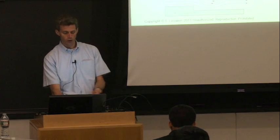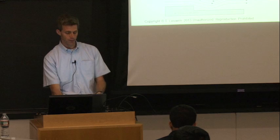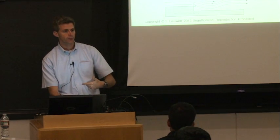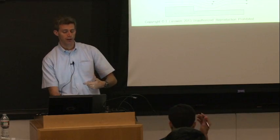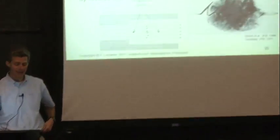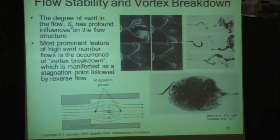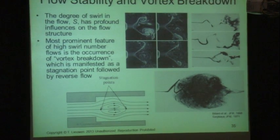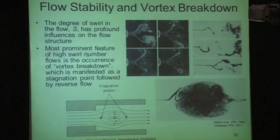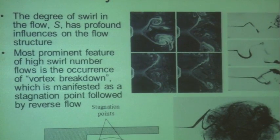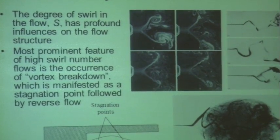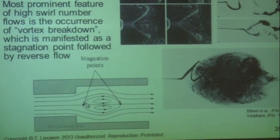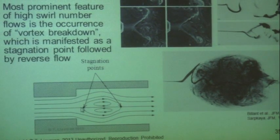The bottom line is if you've got a flow going from left to right and it has an azimuthal flow component, we can define a swirl number S as basically a ratio of azimuthal velocity to axial velocity. When that ratio exceeds some critical value, you get this vortex breakdown phenomenon. I've drawn those streamlines here — you get these stagnation points.